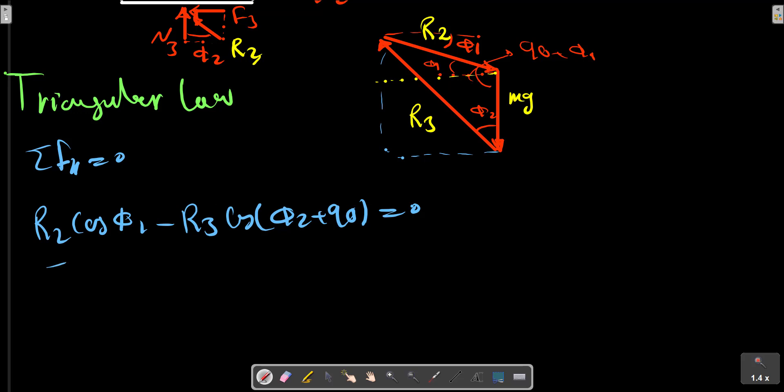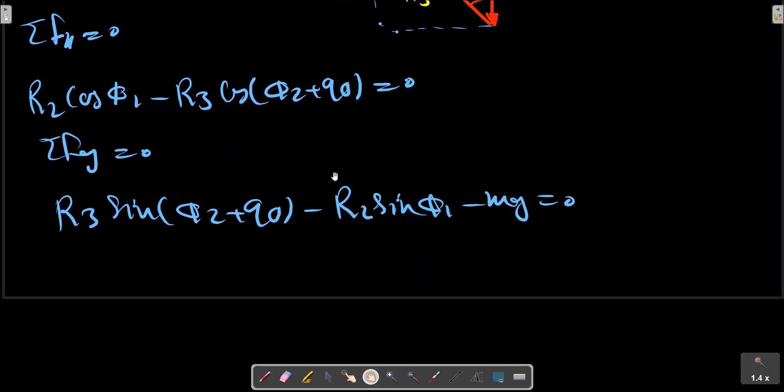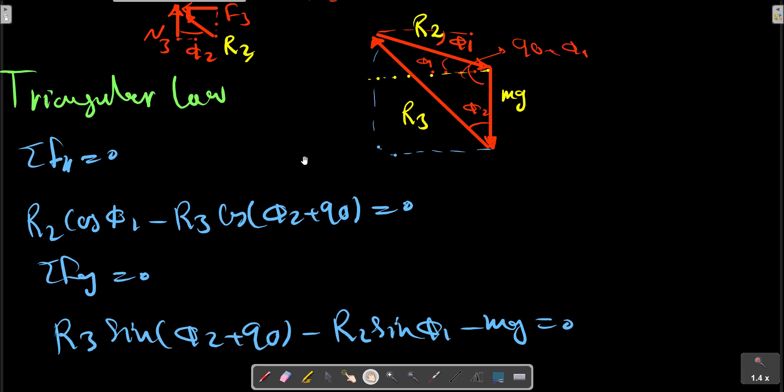And for the y direction: mg - R3·sin(phi_2 + theta) minus R2·sin(phi_1) minus mg equals zero. Excuse me, let me make a correction here: it is 90 minus phi_2.